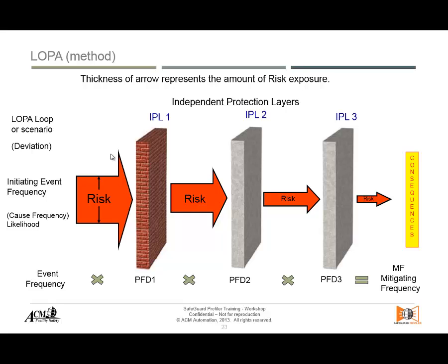Risk is a function of frequency or likelihood with respect to the severity of the consequence. By adding a safeguard we are reducing the likelihood of that unwanted event arriving all the way to the consequence. How many safeguards we need to add is determined by how much we can tolerate that frequency. At the start we have the initiating event frequency; we multiply that by the probability of failure of the first safeguard, the second safeguard, and so on, until the total mitigated frequency equals the tolerable frequency. If total frequency divided by mitigated frequency equals one, we have reached acceptable risk — this comes from the CCPS book.